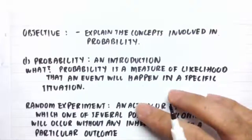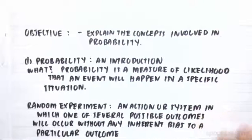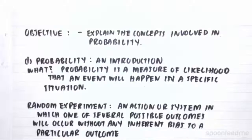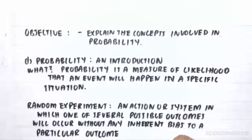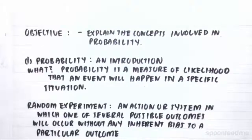For example, if you had a stacked or loaded dice that had a higher probability to land on six, you wouldn't have a random experiment, because there is a bias towards the number six — because you've loaded or stacked the dice.